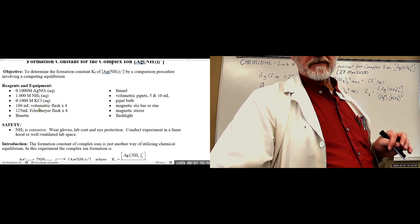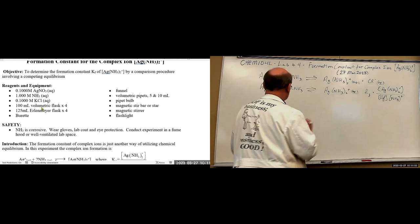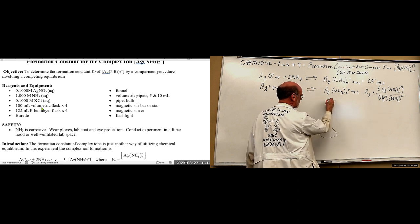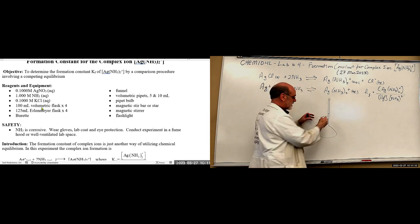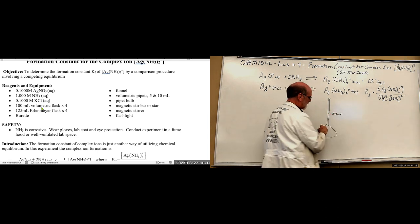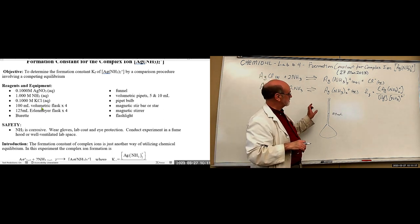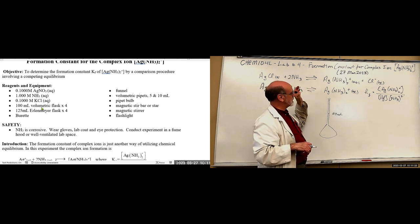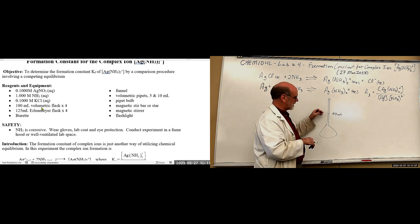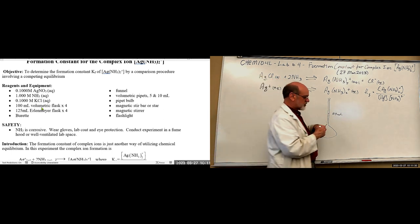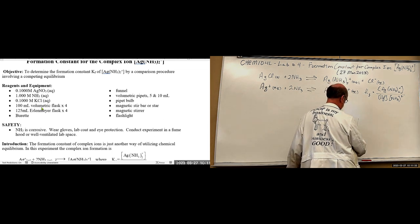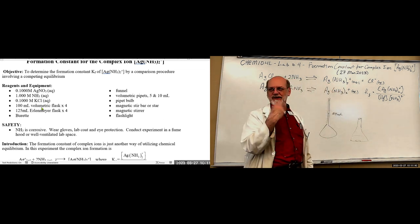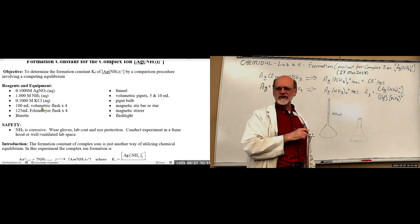And then we have volumetric flasks. Remember volumetric flasks? They have a long, thin neck, and then at the bottom, there's a mark here. And in our case, that represents 100 milliliters of volume. So, you mix up your initial concoction with silver nitrate and ammonia in this. Bring it to volume. And then you pour that into your Erlenmeyer flask.